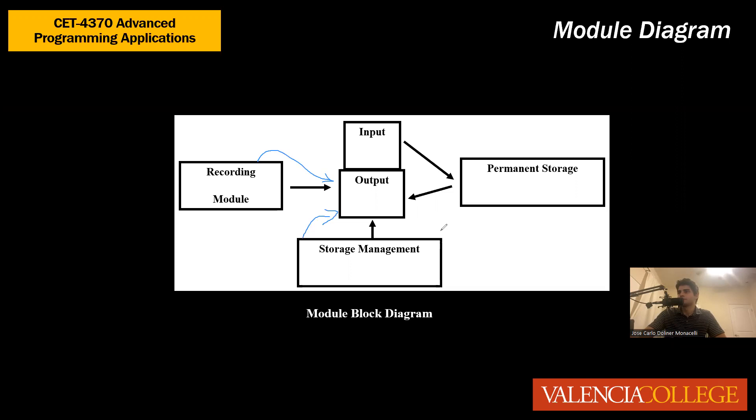The same applies for storage management. The permanent storage module, as explained earlier, manages both input and output devices — because there are switches. Whenever a switch is closed, it interacts with the permanent storage module, which will save all the files depending on whatever input was made, and then signal to the user that the recordings were saved.